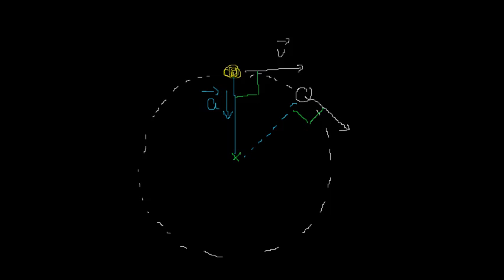So, in this experiment, the acceleration is always perpendicular to the velocity. Therefore, this provides us with the answer: if we have a situation in which acceleration is always perpendicular to the velocity, the motion of the ball must be in a circle.